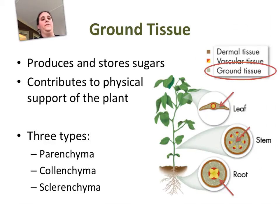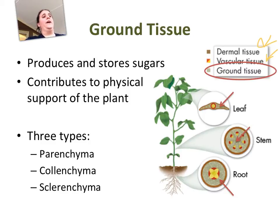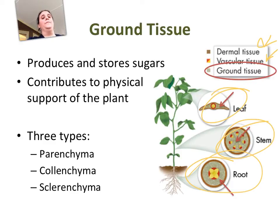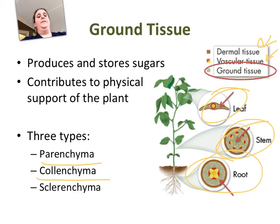Let's do a quick review before we get on to ground tissues. We've talked about dermal tissues, we've talked about vascular tissues, and both of those will be found in the higher plants. Now we're going to talk about ground tissue, the third type of tissue found in all three of the major plant organs. The ground tissue has two main functions: to produce and store sugars, and to contribute to the physical support of the plant. There are three types of ground tissue: parenchyma, collenchyma, and sclerenchyma.